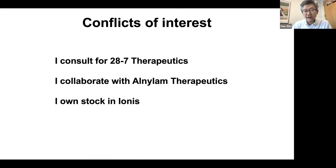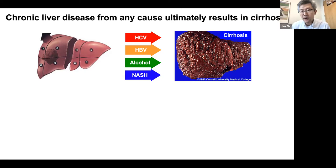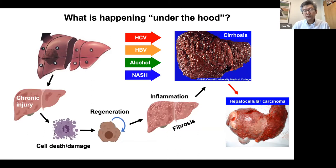The core problem we want to understand is how the regenerative capacity of this amazing organ relates to its susceptibility to injury — chronic injury from a variety of different etiologies — that leads to cirrhosis, which is a major and common problem leading to a wide variety of clinical manifestations. And at the end of this process, you get hepatocellular carcinoma, the most common primary form of liver cancer, commonly appearing in the setting of cirrhosis.